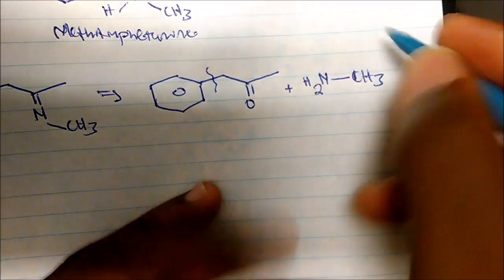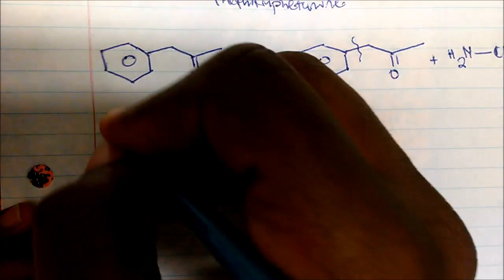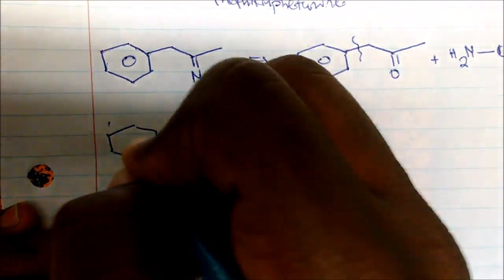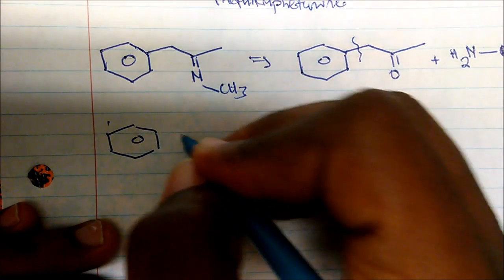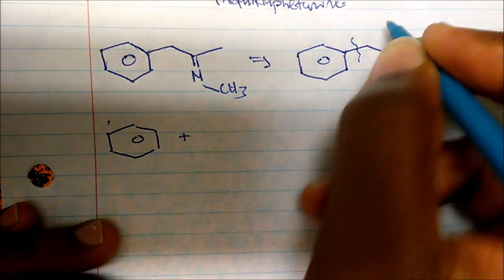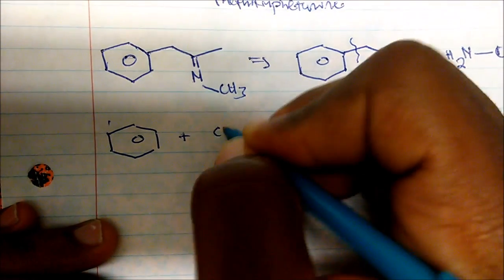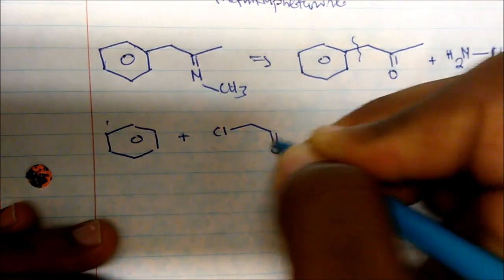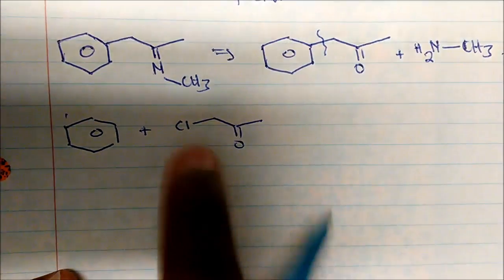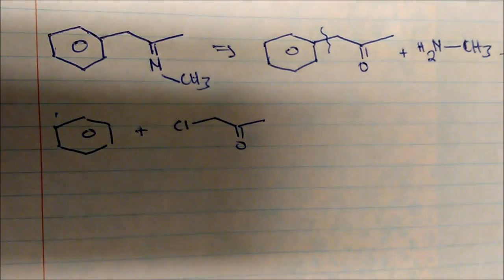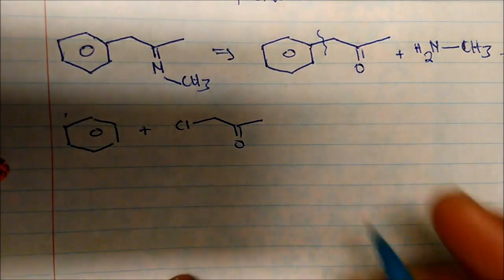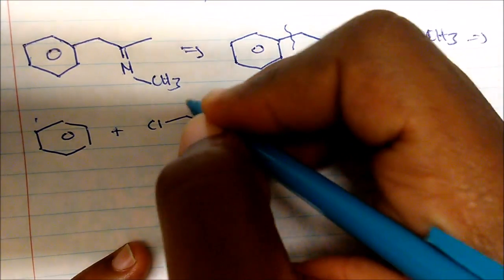And if I break this bond, I know that we can get this from benzene plus I could replace this with a leaving group. So this is chlorine. And so this turns out to be alpha chloroacetone. And how do we make alpha chloroacetone?